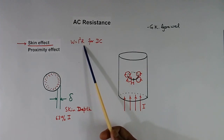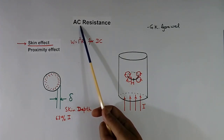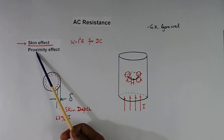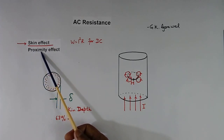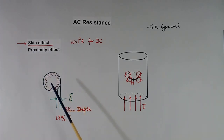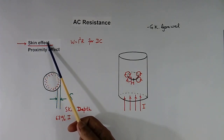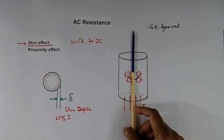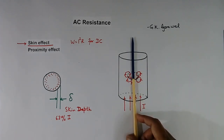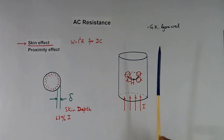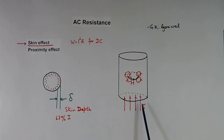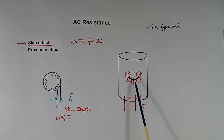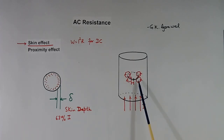This increase in resistance because of higher frequency in AC is due to two reasons. One is called skin effect, and another is called proximity effect. Here we will learn skin effect. Suppose this is a wire in which current is flowing. Because of the current, a magnetic field will be created around this wire, shown here as H. Now if this current is changing, then this magnetic field will also change, and because of the change in magnetic field, an induced EMF will be there inside the wire, and eddy current will be generated.